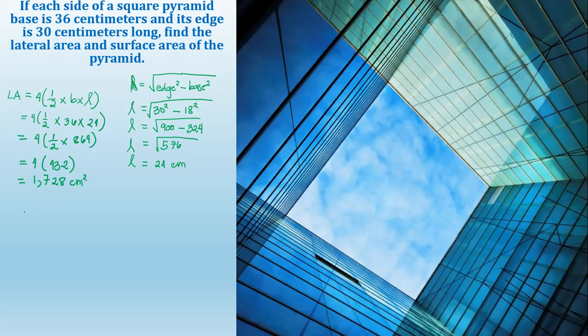And then the base area. We have 36 centimeters. So multiply this one into itself. So 36 times 36 is equal to 1,296 centimeters squared. So we can now compute the surface area.